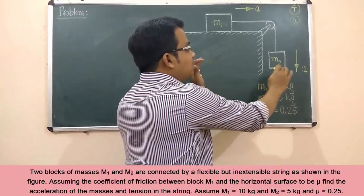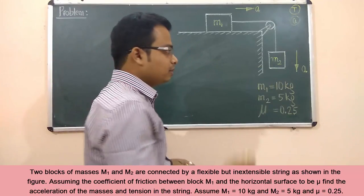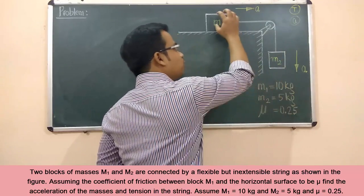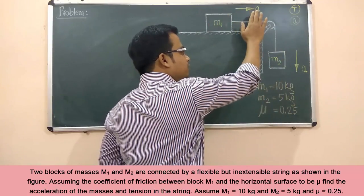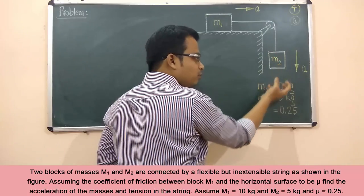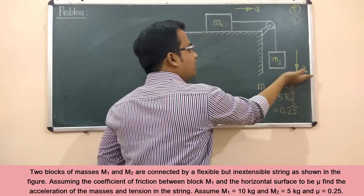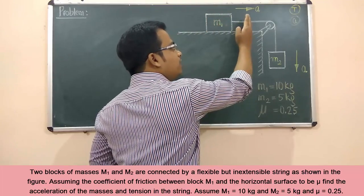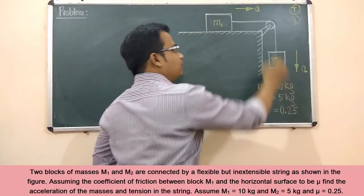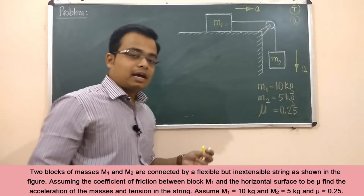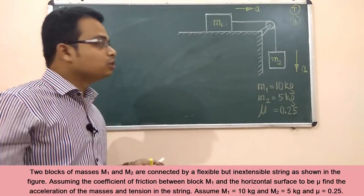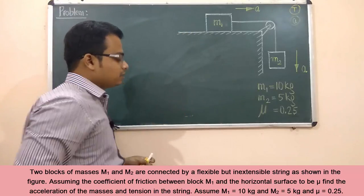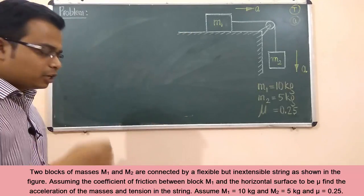When this entire system is released from the state of equilibrium, block m2 will move downwards and block m1 will move in the right-hand side direction — both with the same acceleration a. We're going to be applying Newton's second law of motion to calculate tension and acceleration.